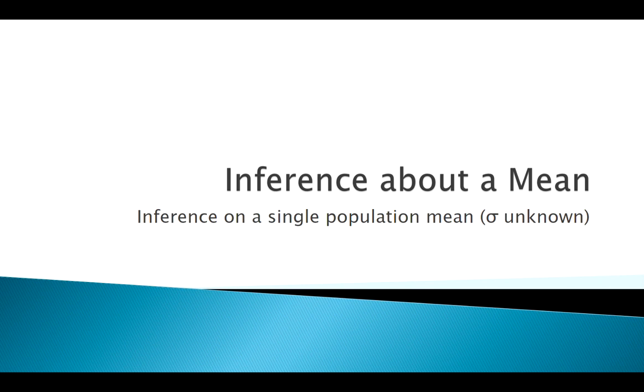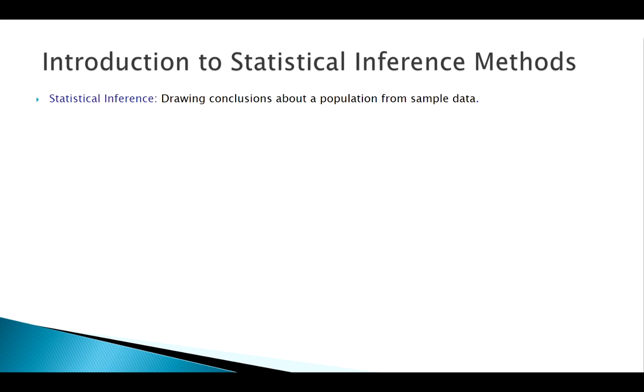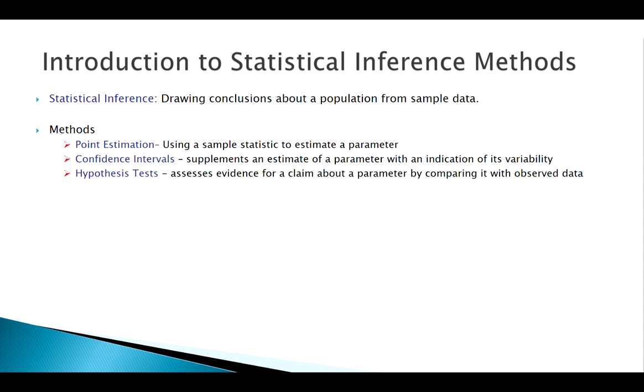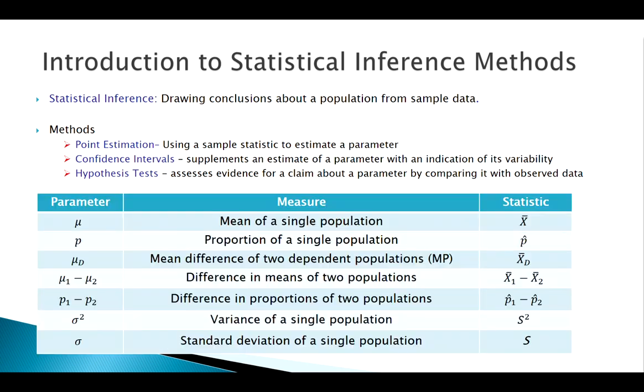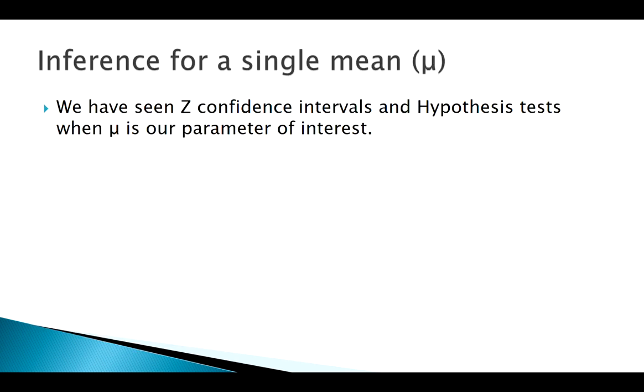So remember where we're going. We know what inference is. We talked about point estimation, confidence intervals, hypothesis tests. We've got all the rationale and the basic ideas of those down already. We're moving down this list and we're starting with x-bar estimating mu.